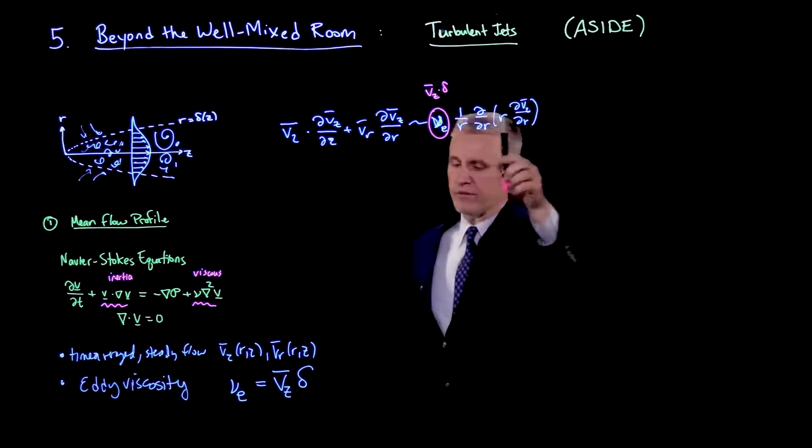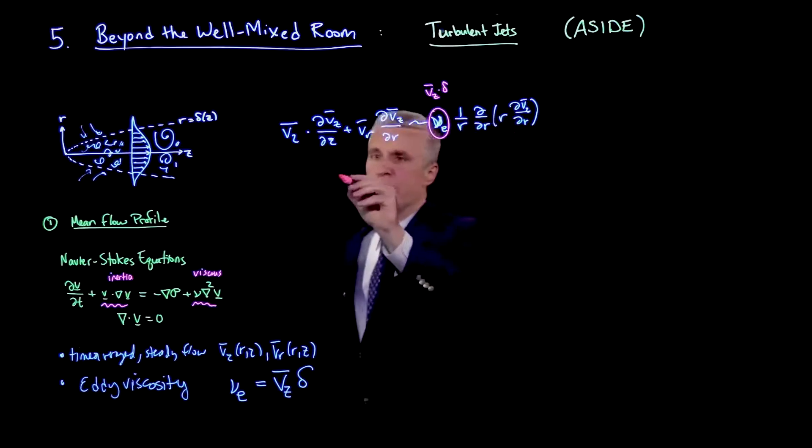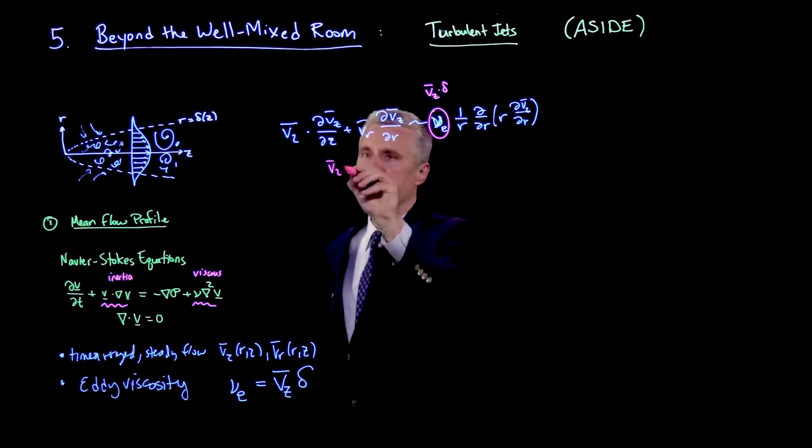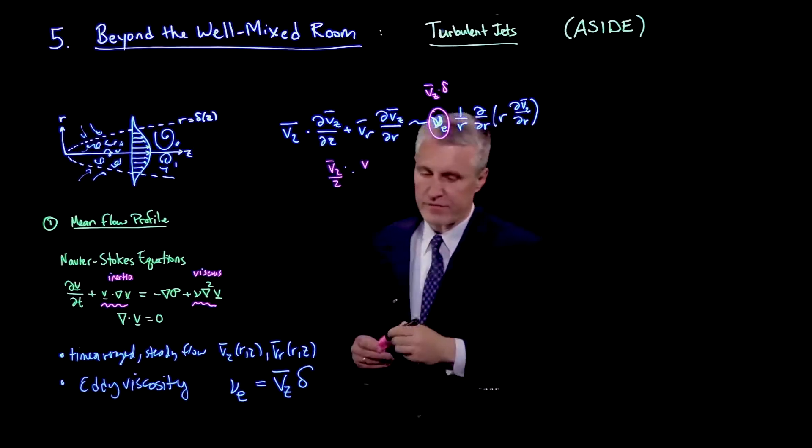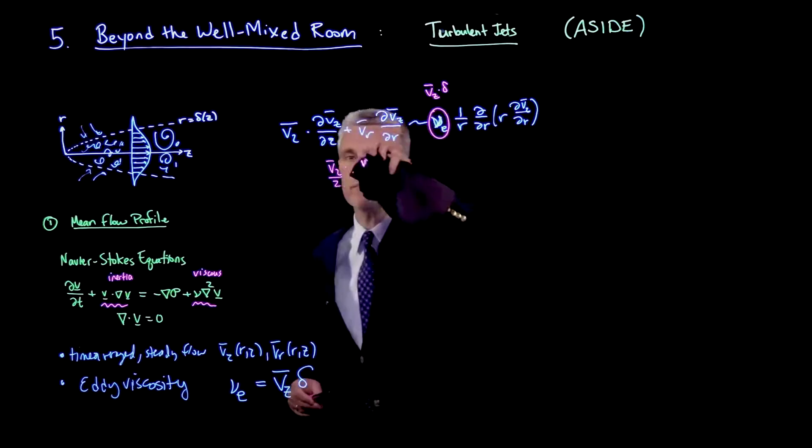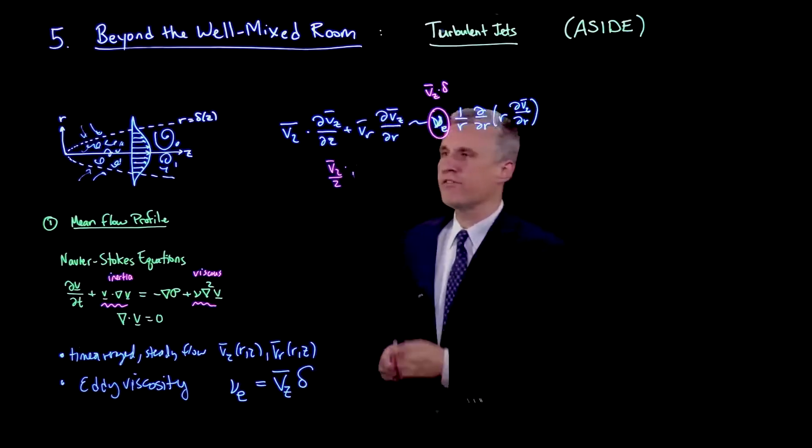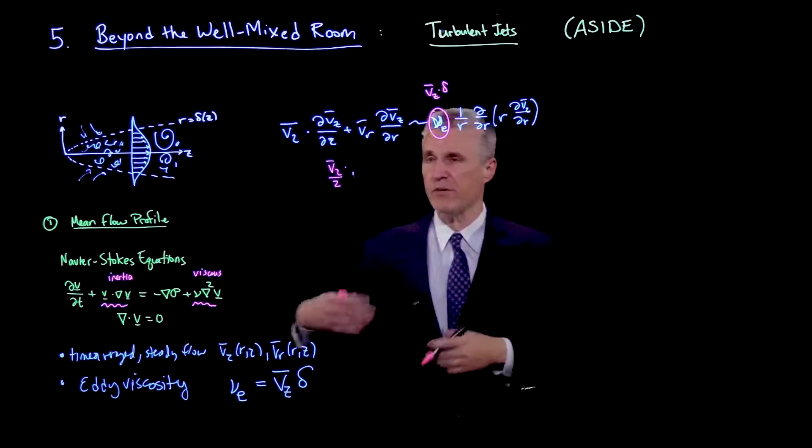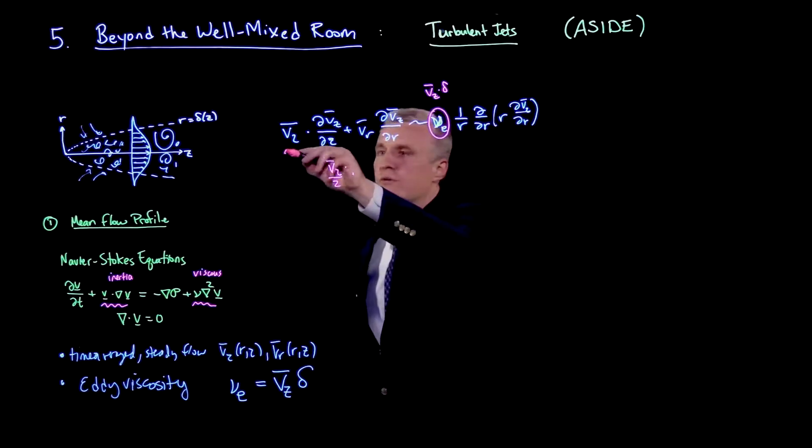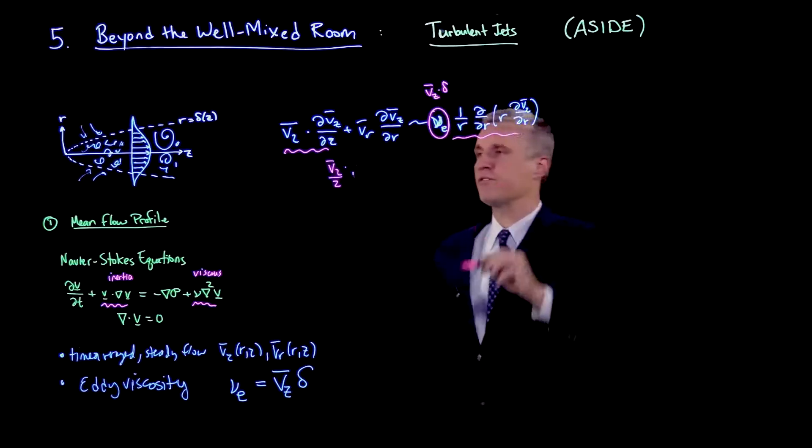And now I'm going to make the assumption that this nu eddy scales as vz bar times delta. And so now I'm going to do a scaling analysis on this equation. And so what we see is we have vz over z times. So I should say these two terms will be of comparable size because of incompressibility, the second equation. I won't go through the details of that. And we'll just do a scaling argument balancing these two terms.